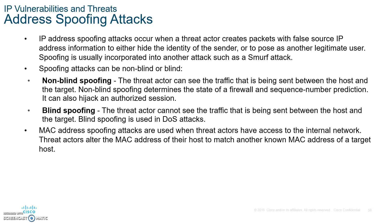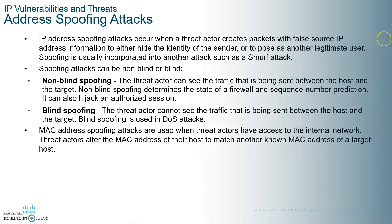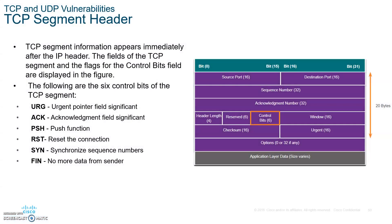Now let's look at the TCP header. This is the segment being transmitted. You can see the control bits — whenever your data goes in or out, these control bits allow you to keep state of the actual data being transmitted. Stateful firewalls use these control bits to manage connections.